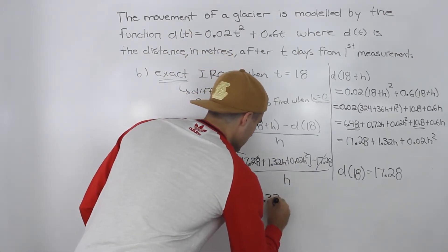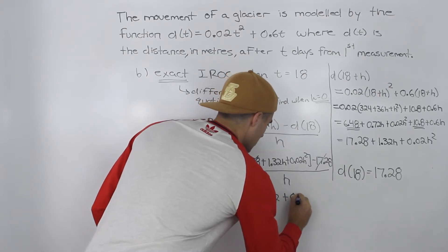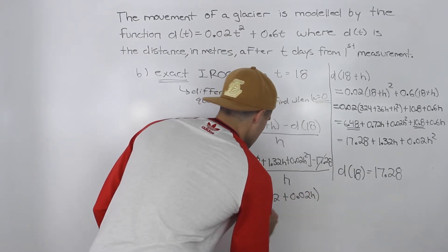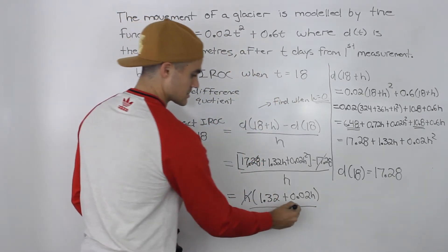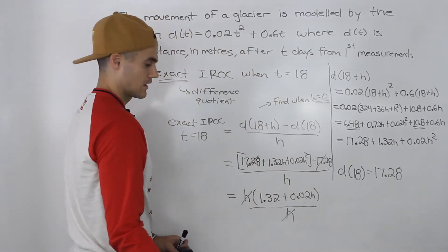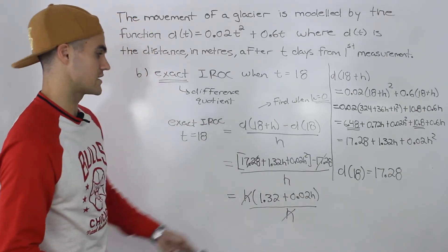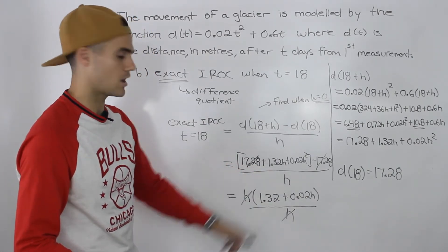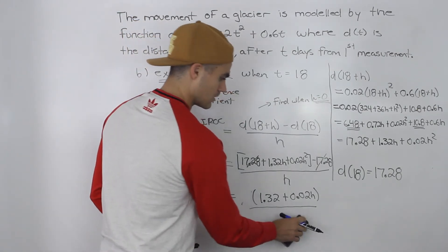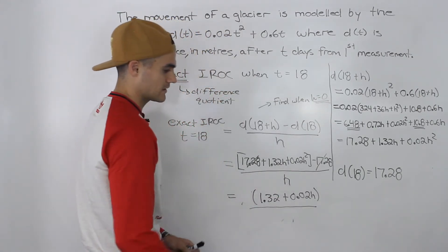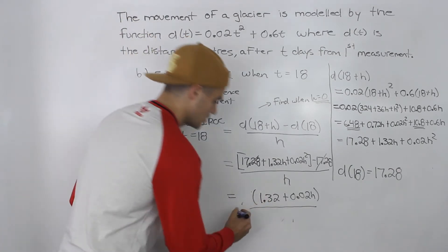If we factor out the h, we end up with h(1.32 + 0.02h), all over h. Notice now how the h's cancel out. Now we can plug in zero for h because the h is not in the denominator anymore. When we plug in zero for h, we're left with what's in the brackets.